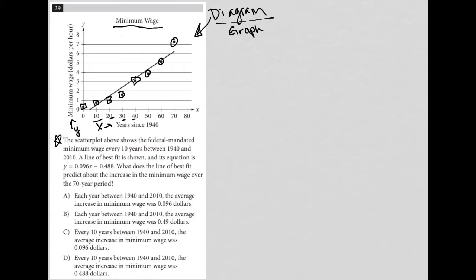So between 1940 and 2010, a line of best fit is shown. So we see that that line doesn't hit every single point, but it kind of gives a general sense of the direction of the minimum wage. We're definitely going up with time.